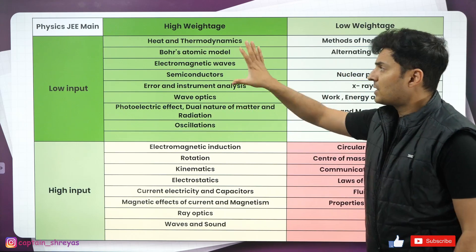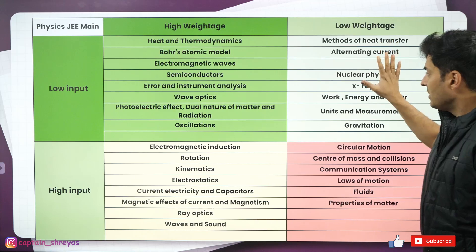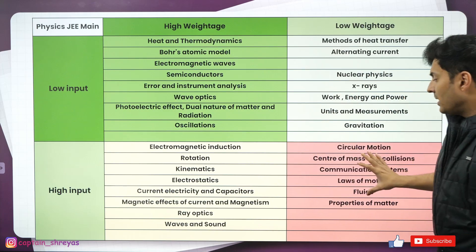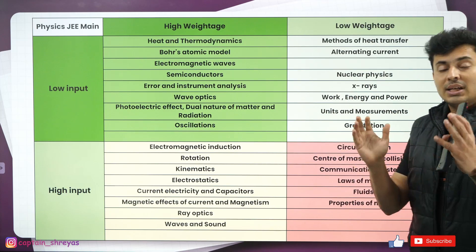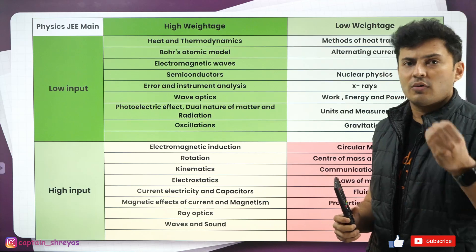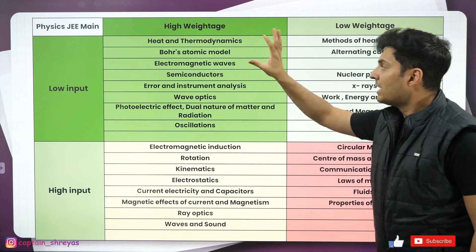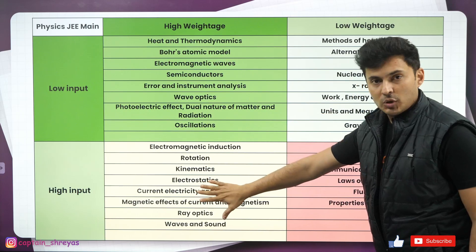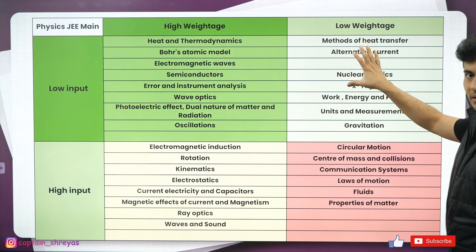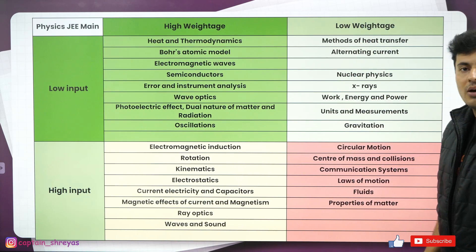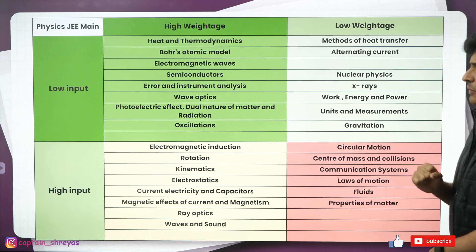So I would suggest go for this, then this, then this one and last, this one if time is not there or if you have very little time in your hand. If you have a lot of time, then obviously this should be done first, this should be done second, this should be done third and last priority on this one. This is for physics. The same goes with chemistry and maths also.